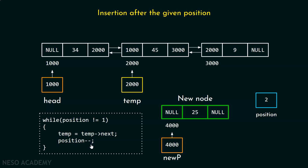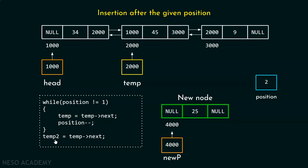It is clear from this piece of code that when the position variable contains two, our temp pointer will move one step forward. If it holds three, then our temp pointer moves two steps forward. Later, we will keep another pointer temp2, so that it can point to the next node. We should remember that temp2 will always point to the node given after the node pointed by temp. That's why I have written temp2 equals temp next. Now, temp2 is pointing to that particular node and everything is set.